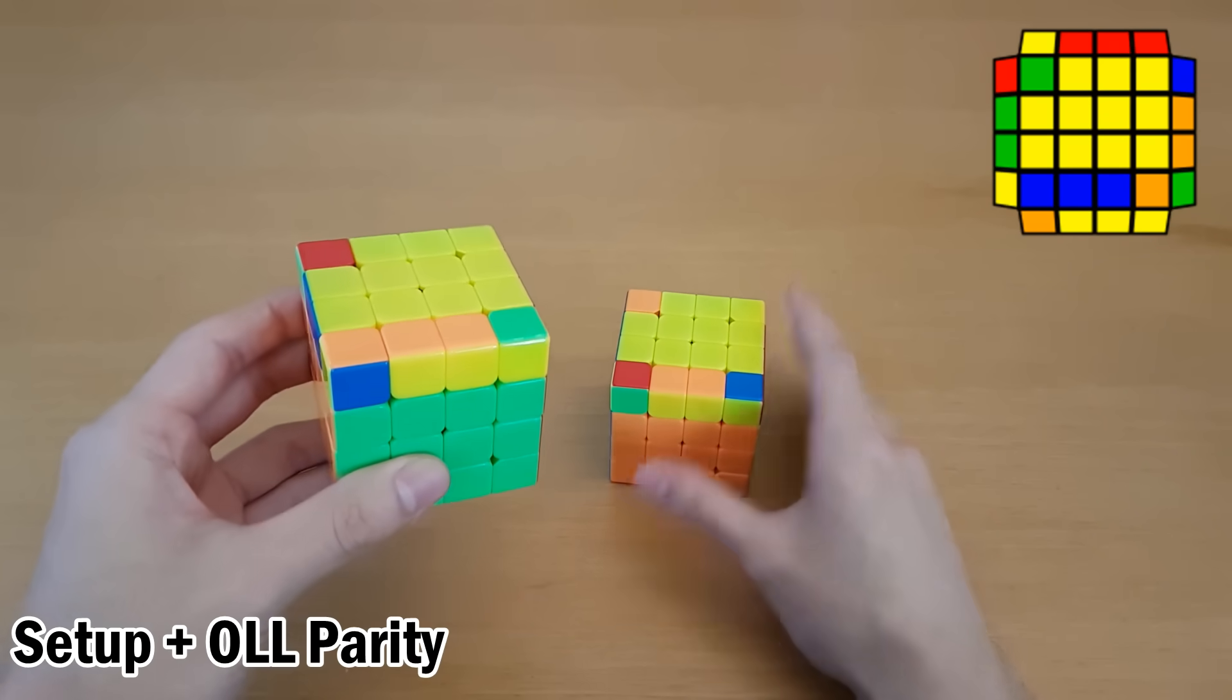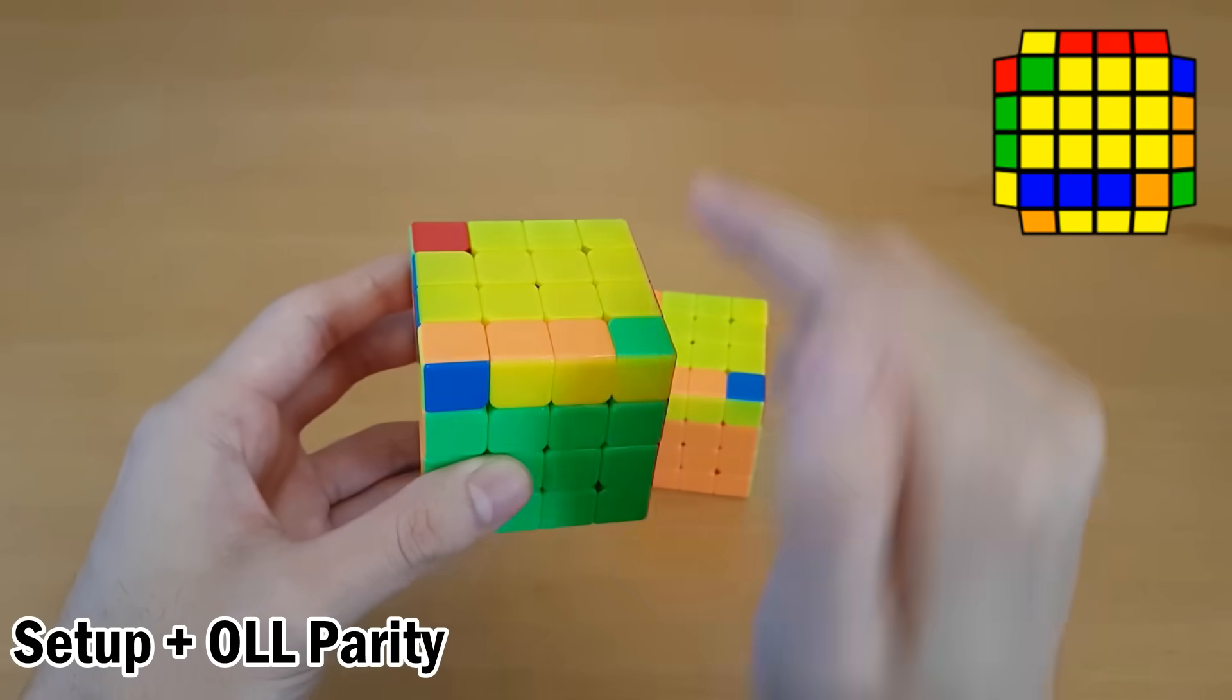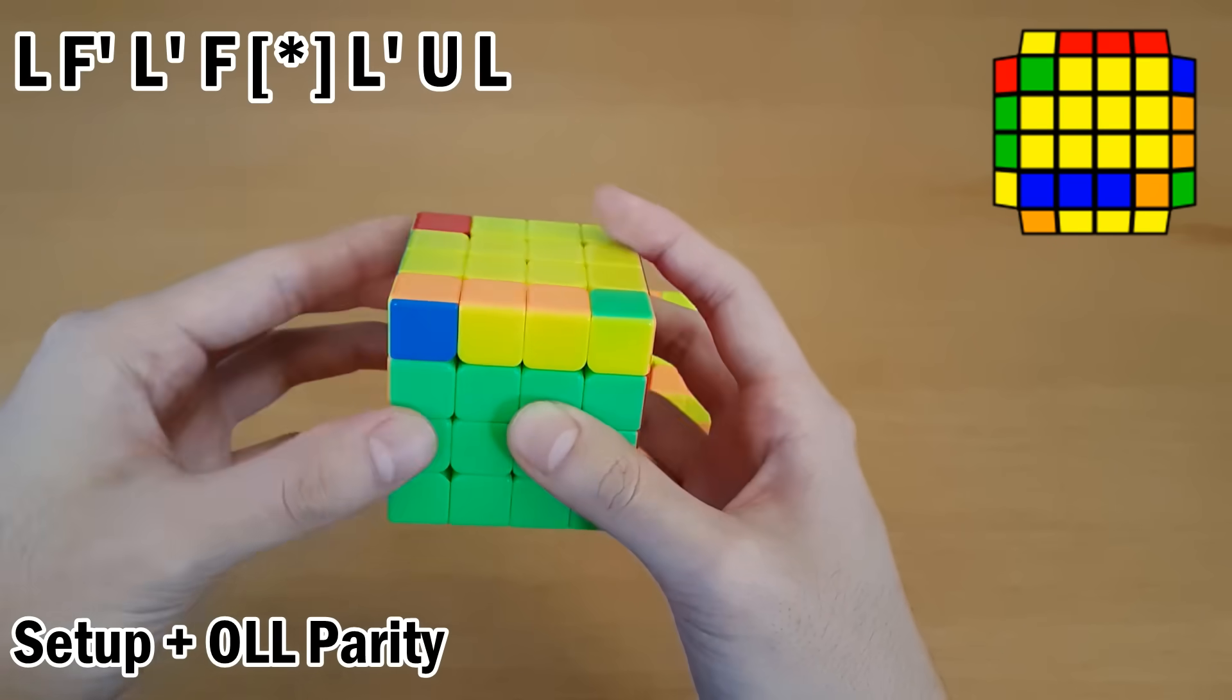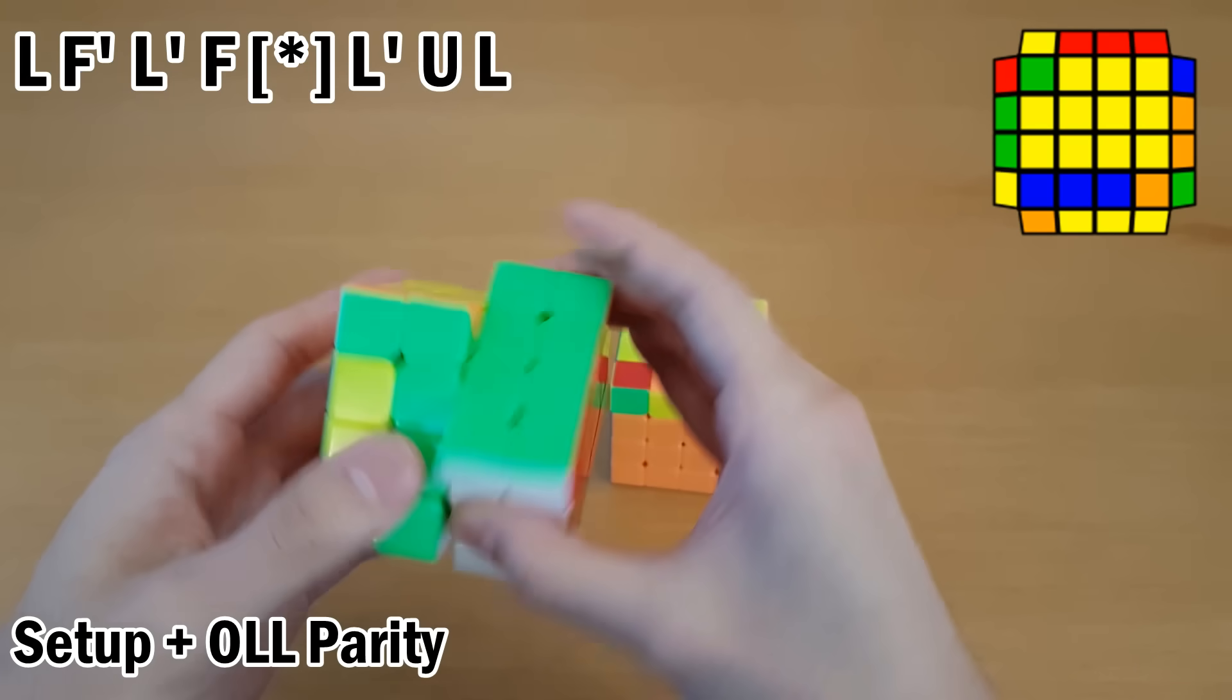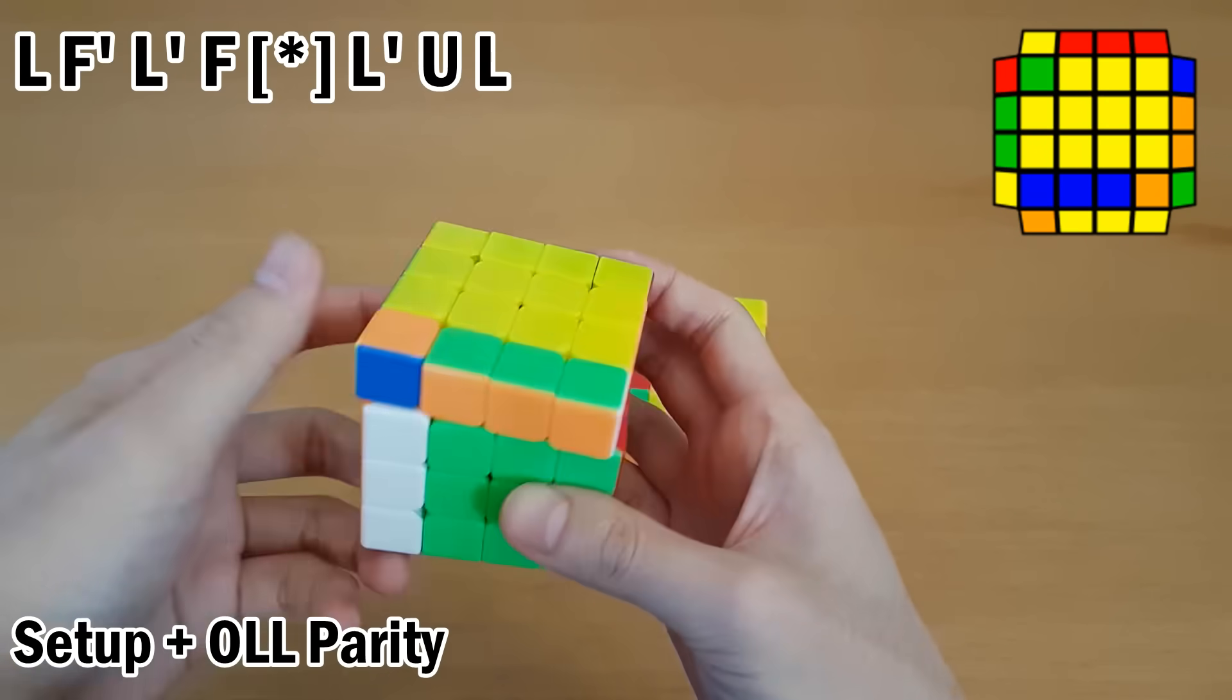So for this case, there's two good ways I know how to do it, and you can just pick one depending on which one you like more. How I recognize this is this block part at the back and this bar right here. So what you can do is for the non-block side, you can either do sledgehammer like that, followed by OLL Parity, and then reinsert this pair.